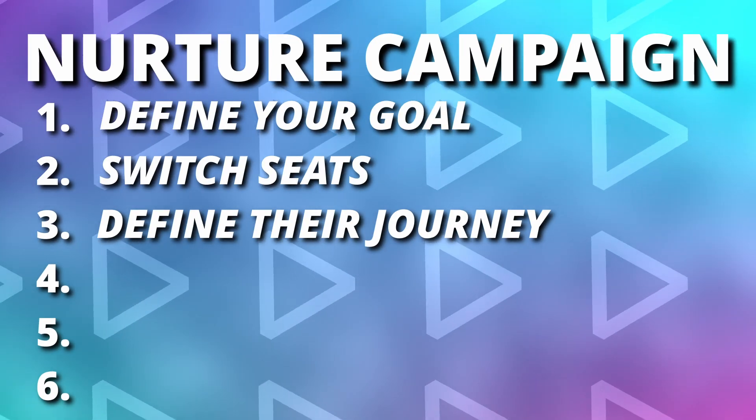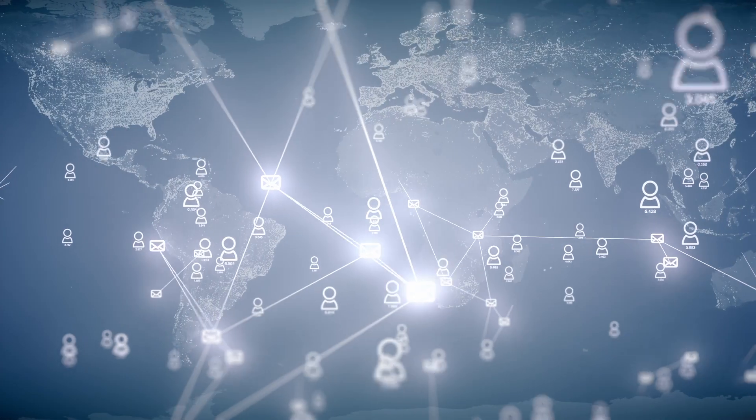Number three is you need to define their journey. They're coming in and you're getting their information at a certain stage of the journey. What email are they going to get first? Where is that first email going to send them? If they engage with that first email, what happens? If they don't engage, what happens? You need to define their journey. You've already brainstormed the topics, so now you start to place these topics specifically and strategically as to when you would teach them each different topic, moving them toward your end result.